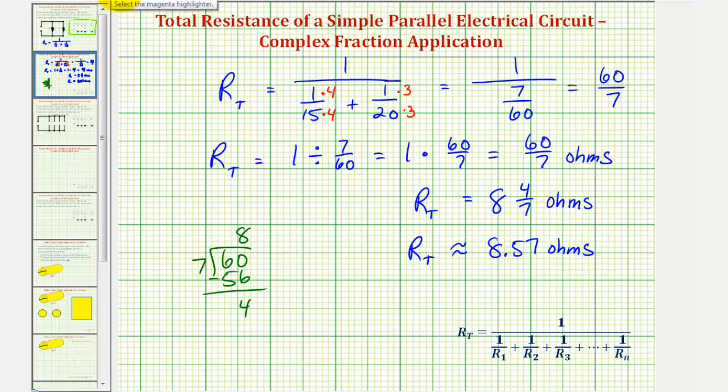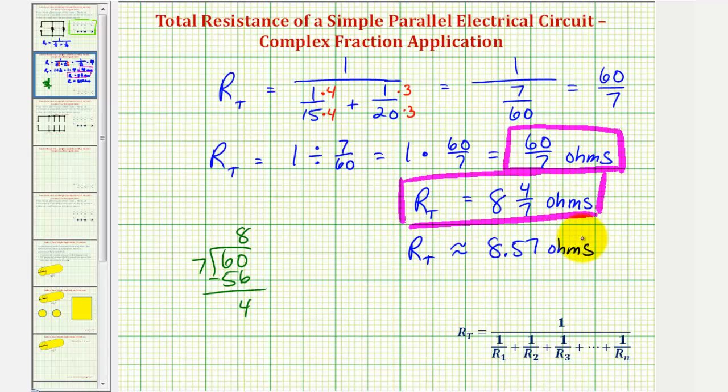So we can express the exact resistance as an improper fraction, or a mixed number. Or if we're asked to round to the hundredths place value, we could give the answer in decimal form. I hope you found this helpful.